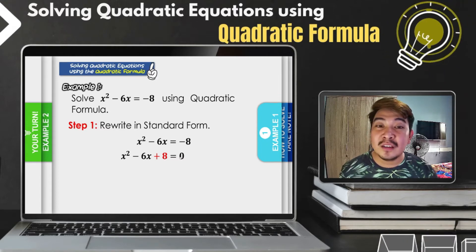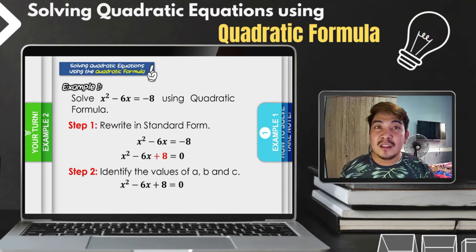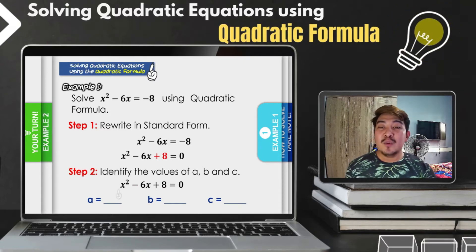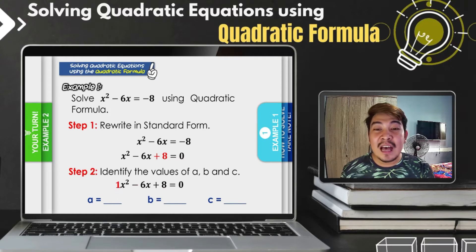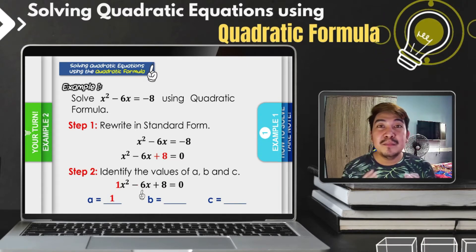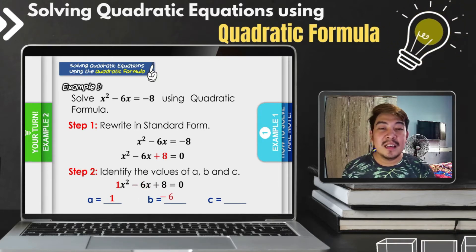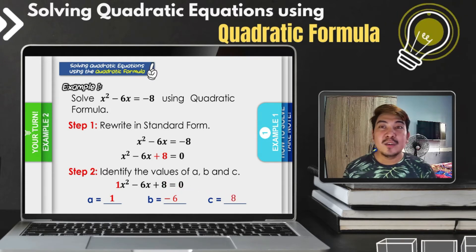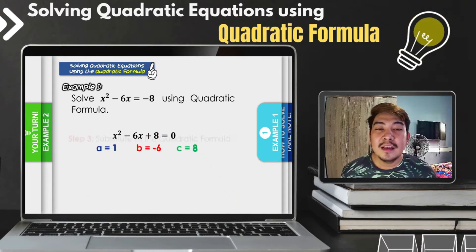Step two, we need to identify the values of a, b, and c from the standard form x squared minus 6x plus 8 equals zero. The value of a is 1 — there is an invisible coefficient of one on x squared. The value of b is negative 6, which is the numerical coefficient of the linear term. The value of c is positive 8. We need to consider whether the values are positive or negative.